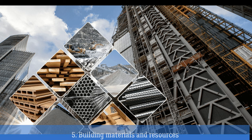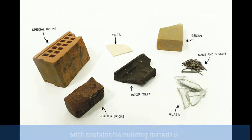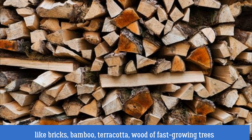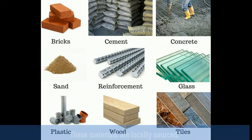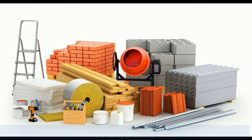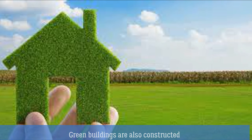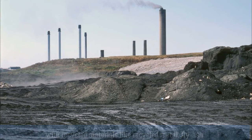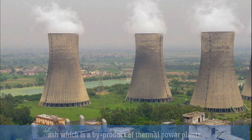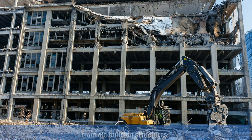Building materials and resources: a green building is constructed with sustainable building materials like bricks, bamboo, terracotta, wood of fast-growing trees, and rammed earth, to name a few. These materials are locally sourced, easily available, and cost-effective because of their low cost of transportation. Green buildings are also constructed with recycled materials like recycled metal, fly ash — which is a byproduct of thermal power plants — and by reusing materials like wood salvaged from old building structures.